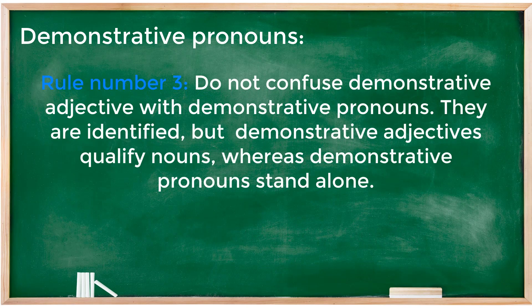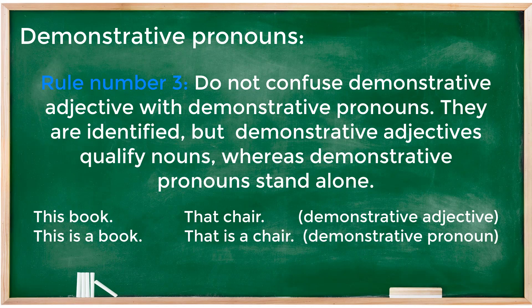The third rule: do not confuse demonstrative adjectives with demonstrative pronouns. They are similar, but demonstrative adjectives qualify nouns, whereas demonstrative pronouns stand alone. For example, 'this book' and 'that chair' are demonstrative adjectives, while 'this is a book' and 'that is a chair' use demonstrative pronouns.